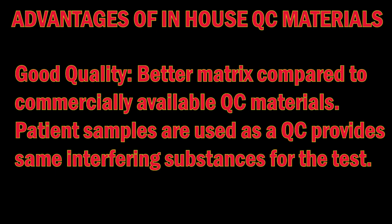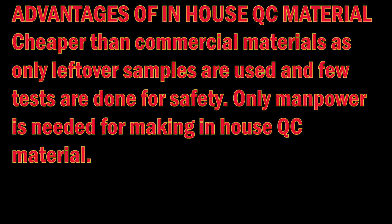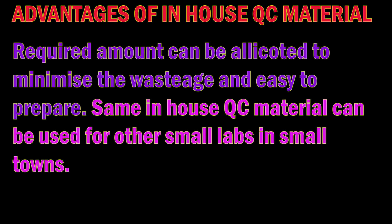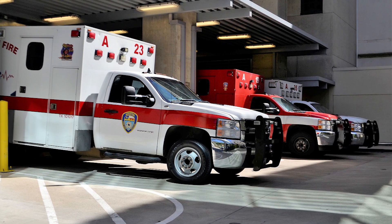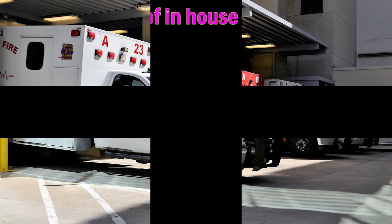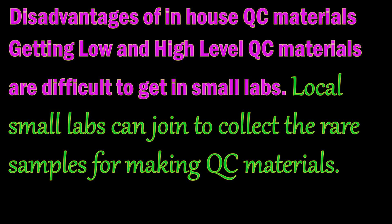Advantages of in-house quality control material: since the internal QC is prepared from patient-type samples, the matrix is the same as a patient sample, compared to commercial QC material matrix. It is cheaper than commercial internal QC materials and easy to prepare. The required quantity of sample can be used as needed. The stability of most biochemical parameters in pooled serum with preservative is better. In-house QC materials can also be prepared for each species in veterinary labs that otherwise use human commercial QC materials. Transport can be avoided and the quality of material is better.